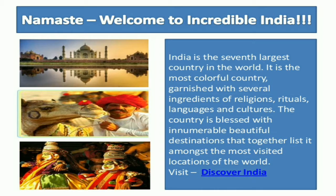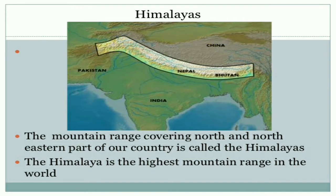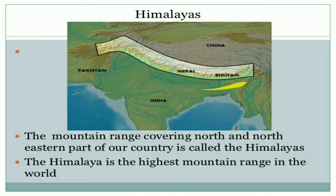India is the 7th largest country in the world. Now we are going to learn the next slide: the Himalayas. The Himalayas are the mountain range covering the north and northeastern part of our country. The Himalayas are the highest mountain range in the world. You all understand that the Himalayas are the highest mountain range in the world.